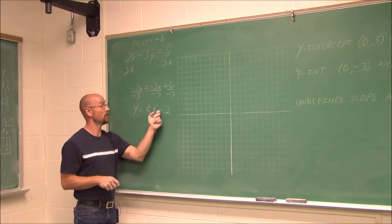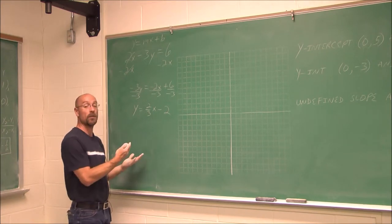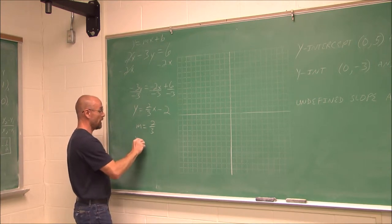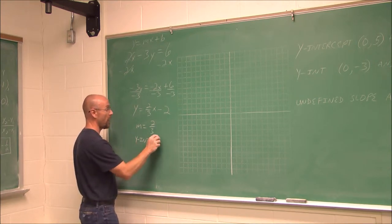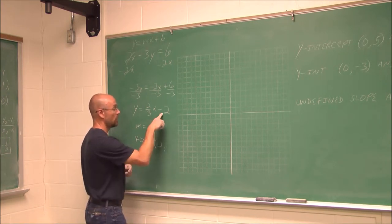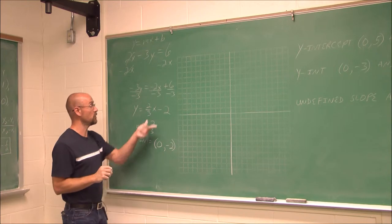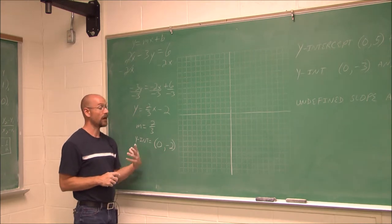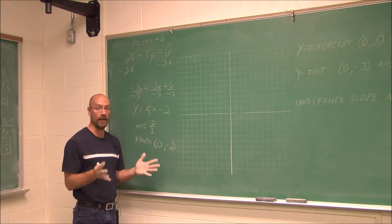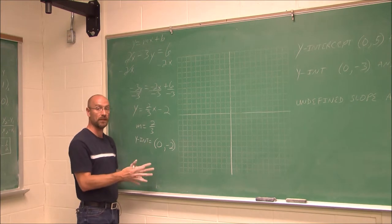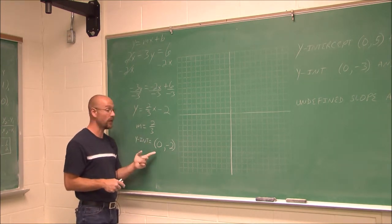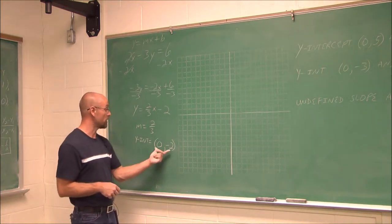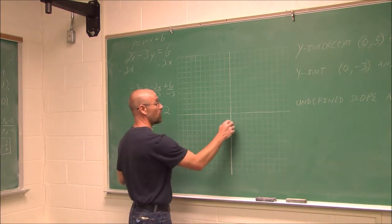The equation y equals two thirds x minus 2 is now in slope-intercept form, y equals mx plus b. The slope is 2 thirds, and the y-intercept is the ordered pair (0, negative 2) — the b value is negative 2, and that sign belongs to that value. With this information I can graph it without building a t-table of values.